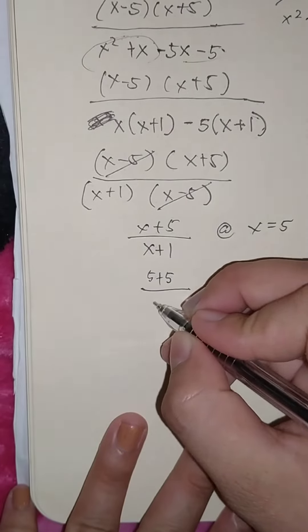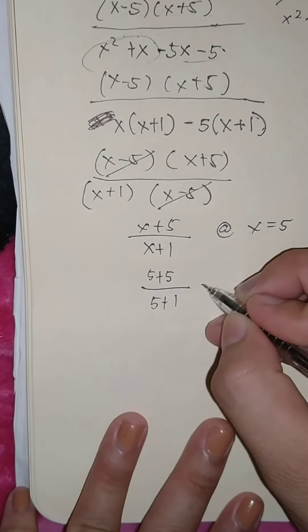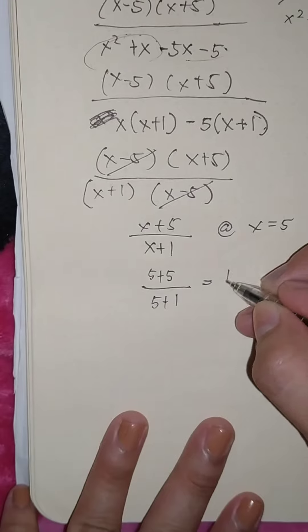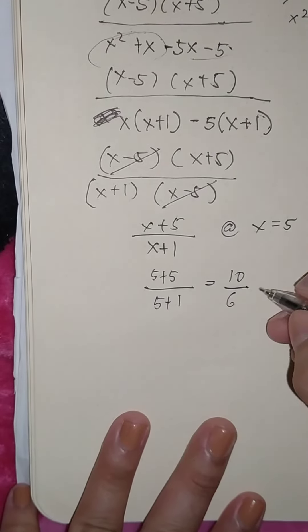We have 10 over 6. So if we simplify this, we can divide by 2. We have 5 thirds. So this is our final answer.